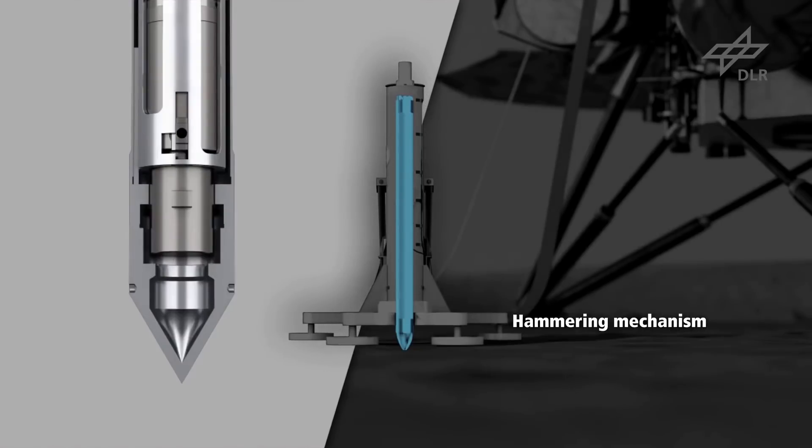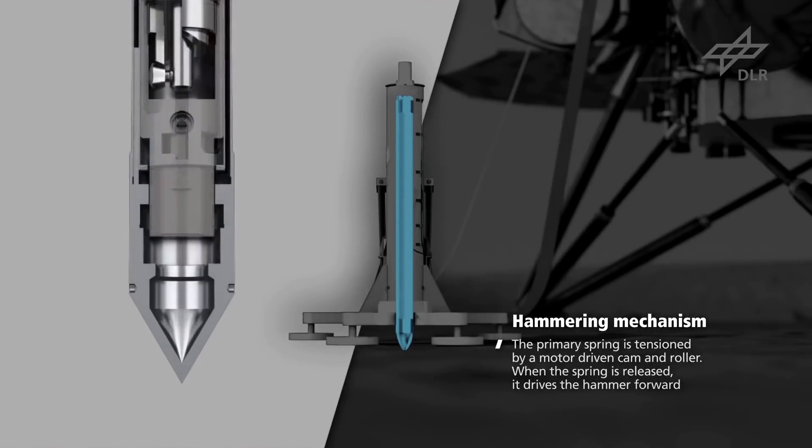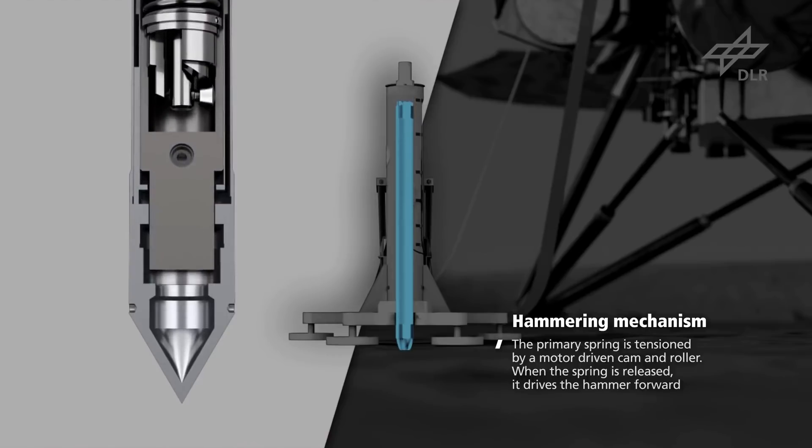As you can see in the video right now, there is a motor that spins something called a roller, and this roller is connected to two springs, one on the bottom and one on the top.